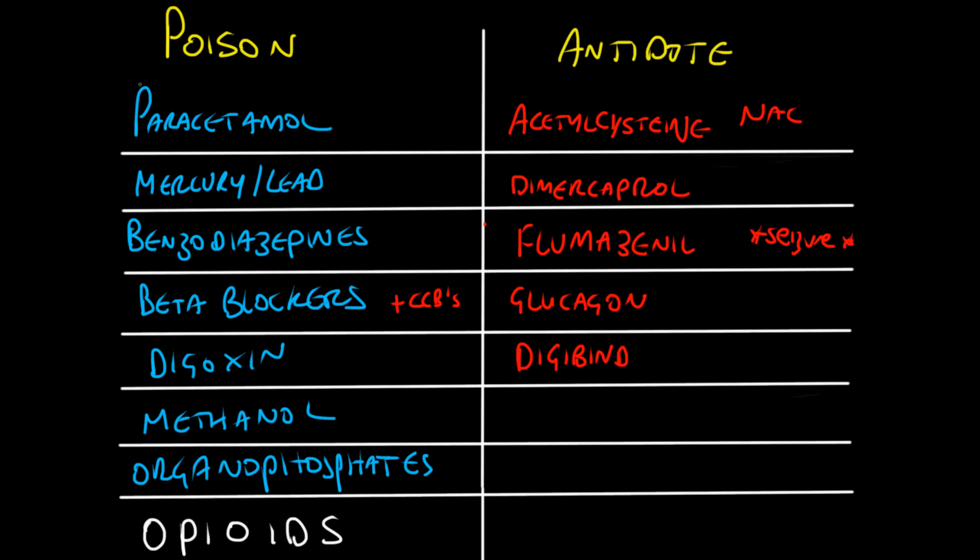Ethanol can be given to people who have ingested methanol. It literally out-competes the process because ethanol will compete for the same metabolic pathway — the CYP450 pathway — that would otherwise be metabolizing methanol, so the methanol will not be metabolized.